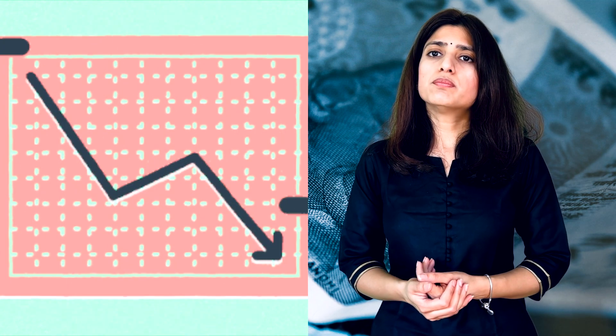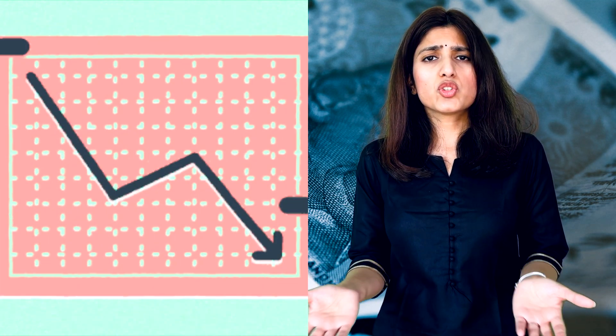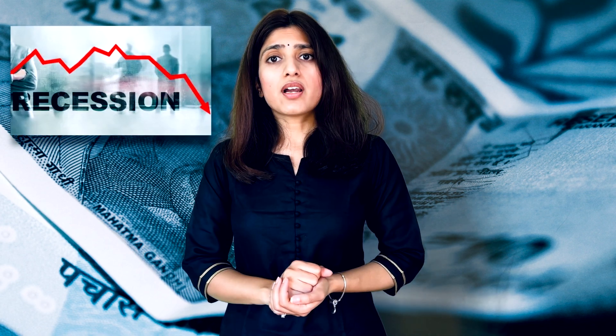You will often hear about GDP growth rate, which is calculated quarterly or annually. Generally, when the economy is healthy, the GDP growth rate will be higher, and if the economy is in poor shape, the growth rate will be lower. If GDP growth is negative for more than two consecutive quarters, it is called a recession — as seen during the 2008 financial crisis and the COVID pandemic, which pushed many of the world's economies into recession.